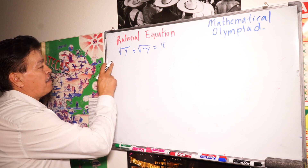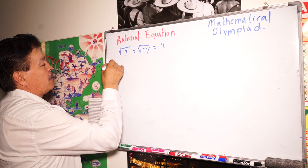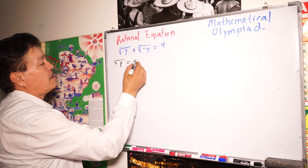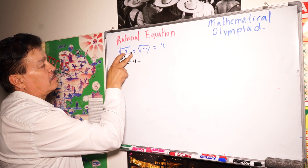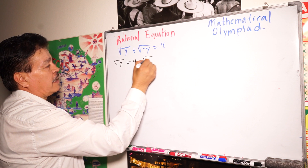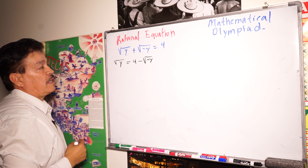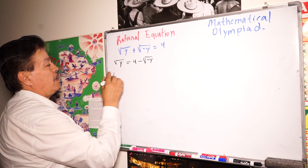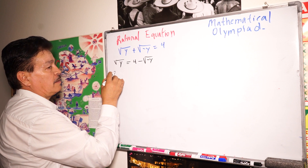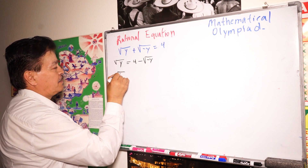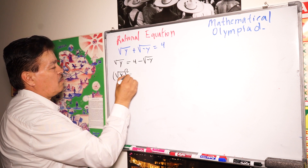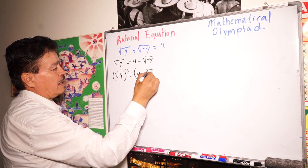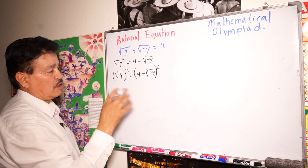The next step should be to isolate one radical: square root of y equals 4 minus square root of negative y. So now our next step is to square both sides — that is, raise each side to the second power: square root of y squared equals (4 minus square root of negative y) squared.